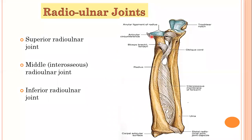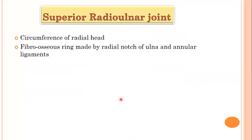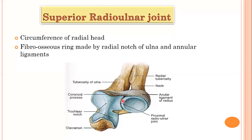You can see the head of radius making the superior radio-ulnar joint with the radial notch of the upper end of ulna. And here, the head of ulna making the inferior radio-ulnar joint with the ulnar notch of the lower end of radius. The middle radio-ulnar joint has the two interosseous borders attached by the interosseous membrane. Regarding the articulating surfaces of the superior radio-ulnar joint: on the medial side is the radial notch of ulna, and on the lateral side is the head of radius.